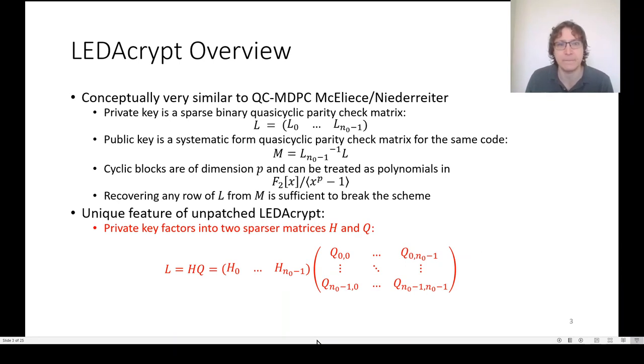Conceptually, the two schemes are quite similar. In both cases, the private key is a sparse binary Quasi-Cyclic Parity Check matrix, which we've denoted as L here. The public key is just the systematic form of a Quasi-Cyclic Parity Check matrix for the same code, M.